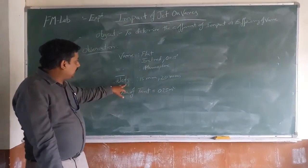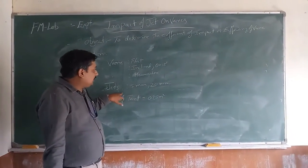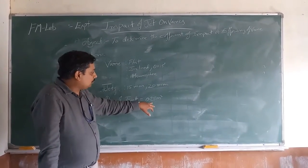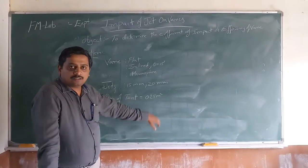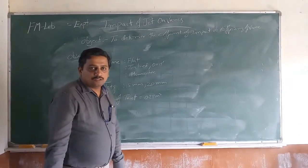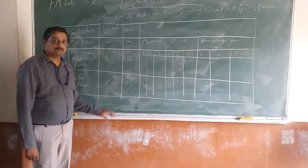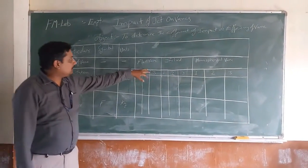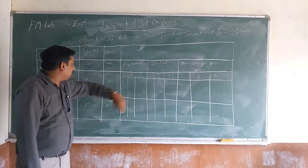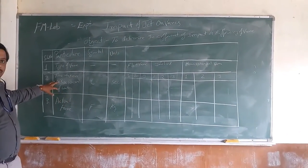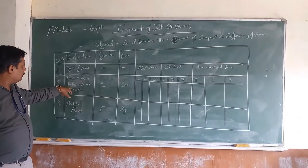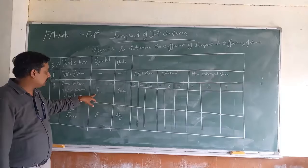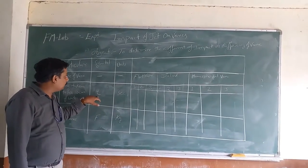The jet dimensions are around 15 mm and 20 mm. The collection tank has a capacity of 0.25 m². In the observation tabular column we have type of vane — flat, inclined, and hemispherical. The next observation we should take is time rise: the time taken to raise 10 cm of water in the collection tank, recorded in seconds T.